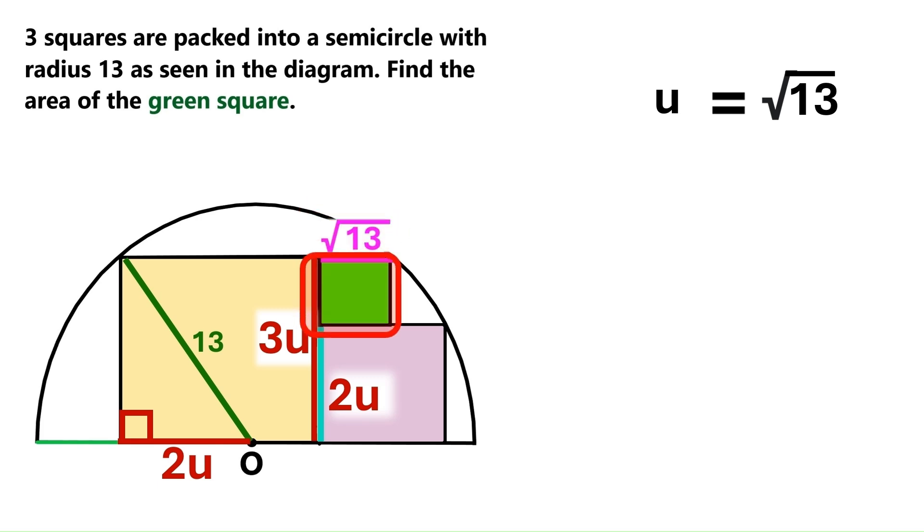Now my son will help us find the area of the green square. Go ahead son. Hello people. The area of a square equals the square of one of its sides.